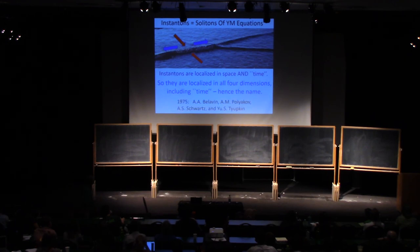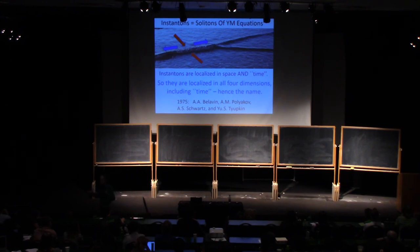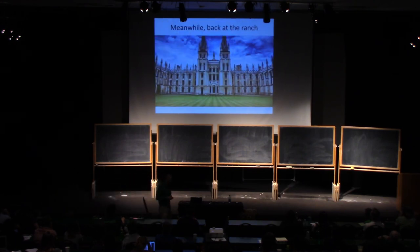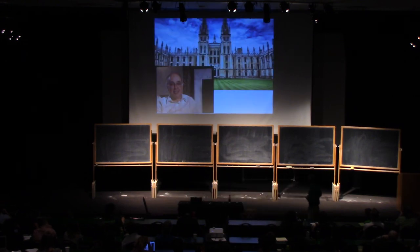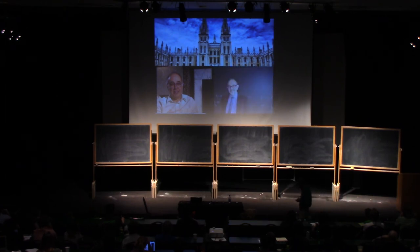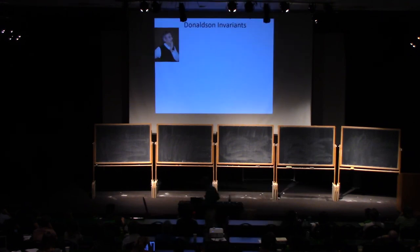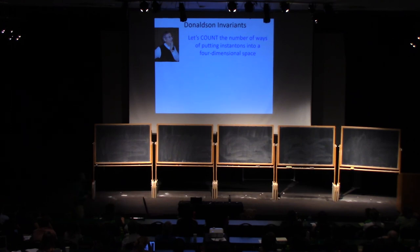The instanton solutions of the Yang-Mills equations are localized in space and time, all space dimensions and the time directions, and that's why they're called instantons. They were discovered by Belavin, Polyakov, Schwartz, and Tyupkin in the mid-70s. In the mid to late-70s, the physicists were having a great time playing with these and other soliton-like solutions of the Yang-Mills equations. What about the mathematicians? Meanwhile, back at the ranch, the mathematicians were beginning to take note. One of them was Michael Atiyah and his student, Simon, and his student, Nigel Hitchin, and they had a student, Simon Donaldson, who said, let's count the number of ways of putting instantons into a four-dimensional space.